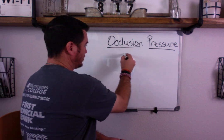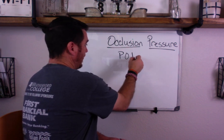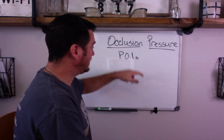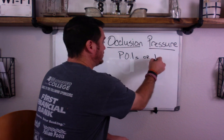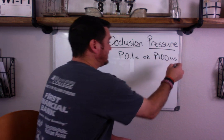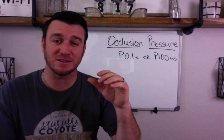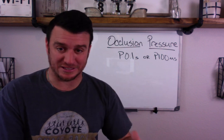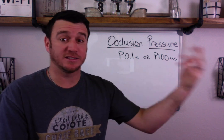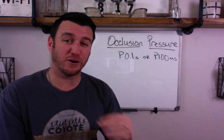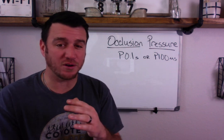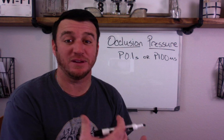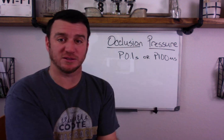When we say occlusion pressure, we're talking about the inspiratory pressure at 0.1 seconds — you'll also see it referred to as the P100, and this is in milliseconds. So we're talking about the inspiratory pressure generated within the first 100 milliseconds of the central drive to breathe saying 'take a breath.' This is important because it occurs before the inspiratory valve of the ventilator ever even recognizes or initiates a breath.